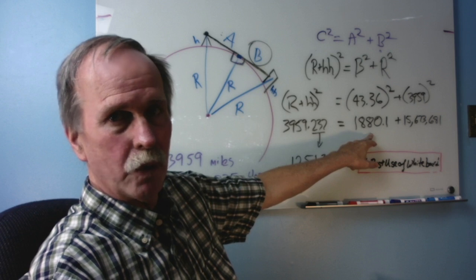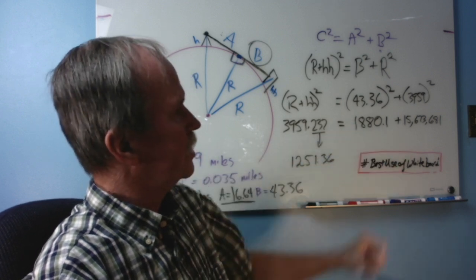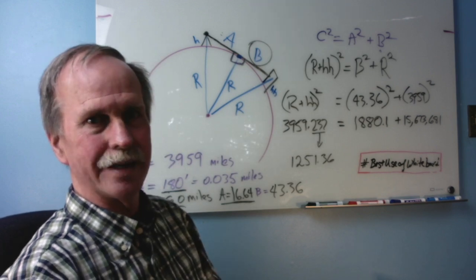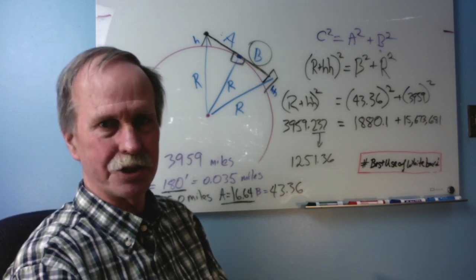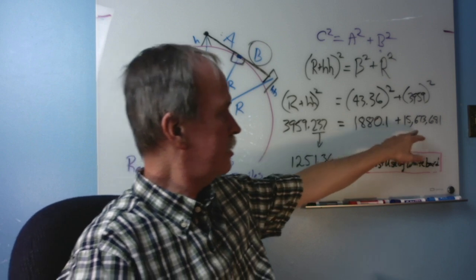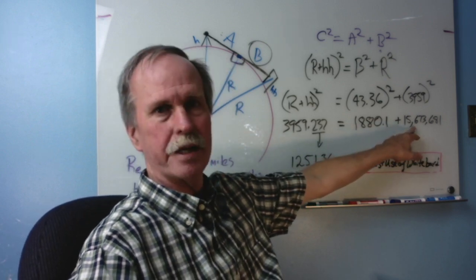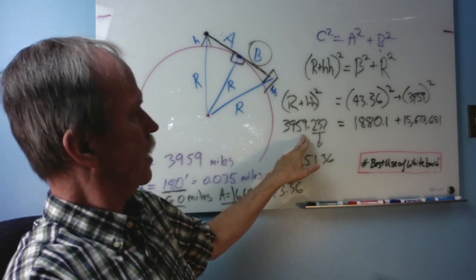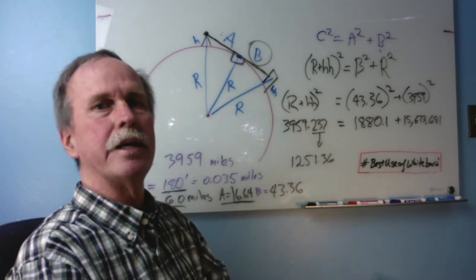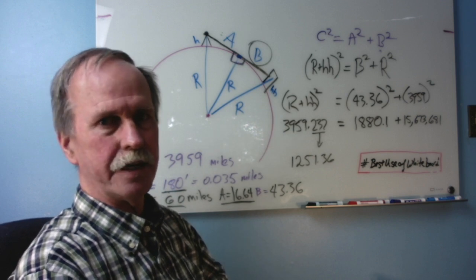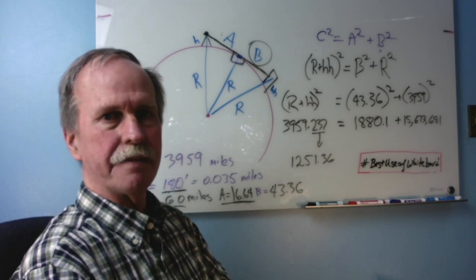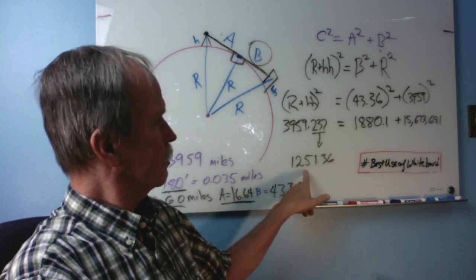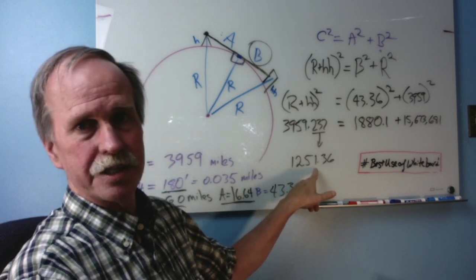And then that gives us 1880.1 and 15,673,681, which is the radius of the earth squared. Now, when you add these two together, you get a great big number. You take the square root of that number and you get 3959.237. Now, since the radius of the earth is 3959, the 0.237 miles is the hidden height of the building works out to 1251.36 feet.